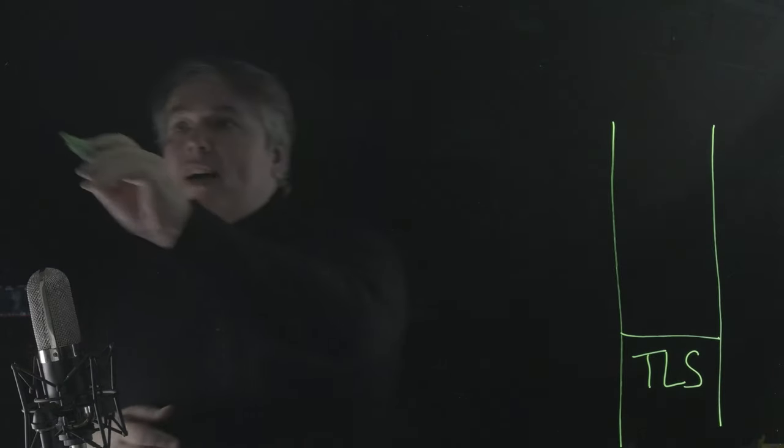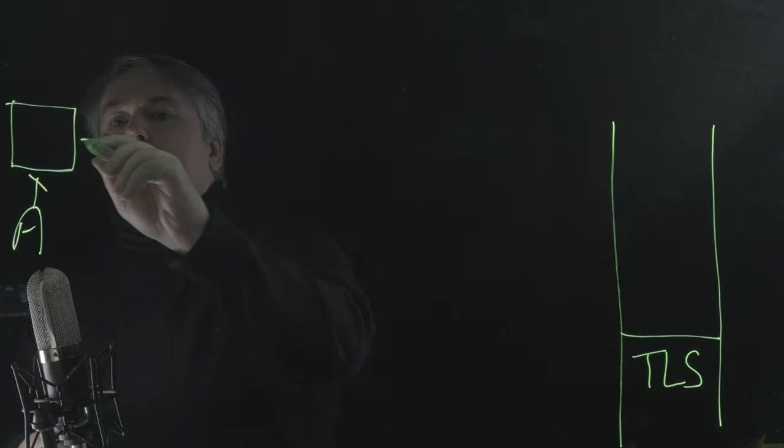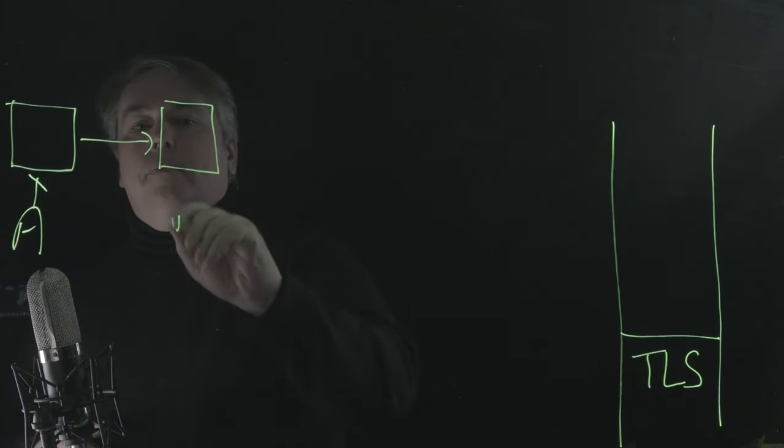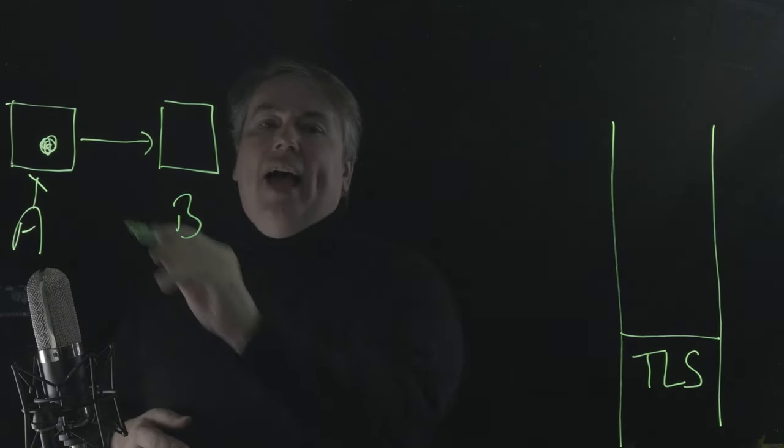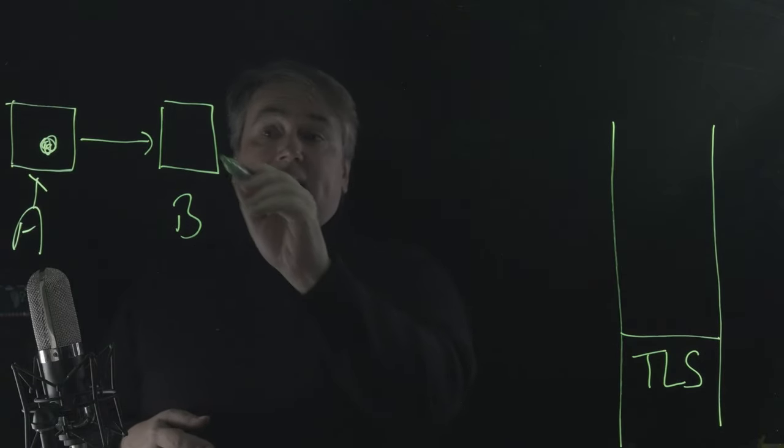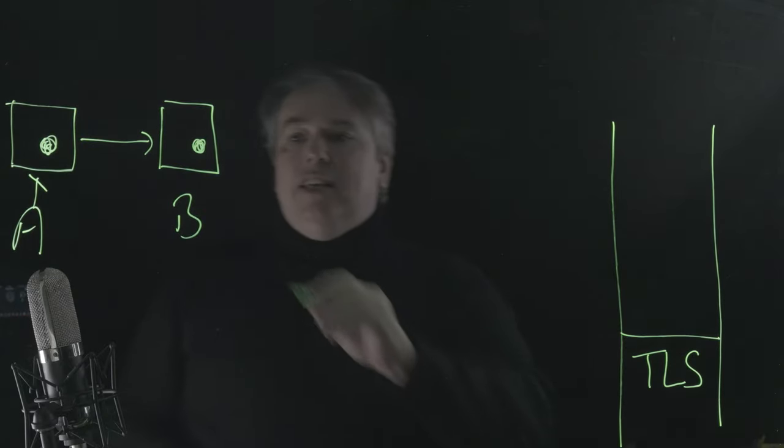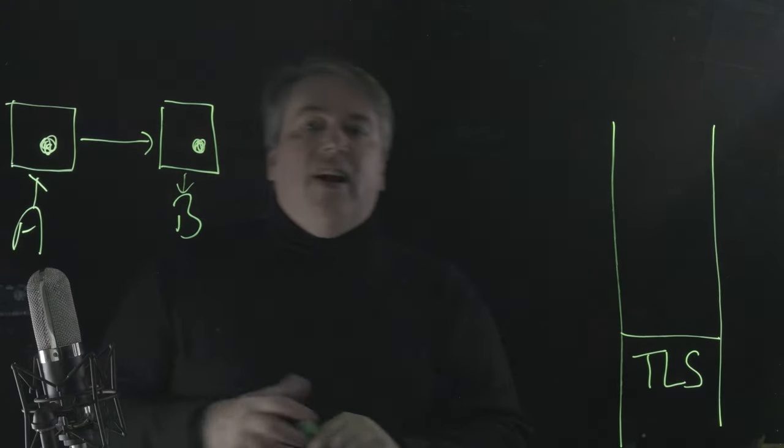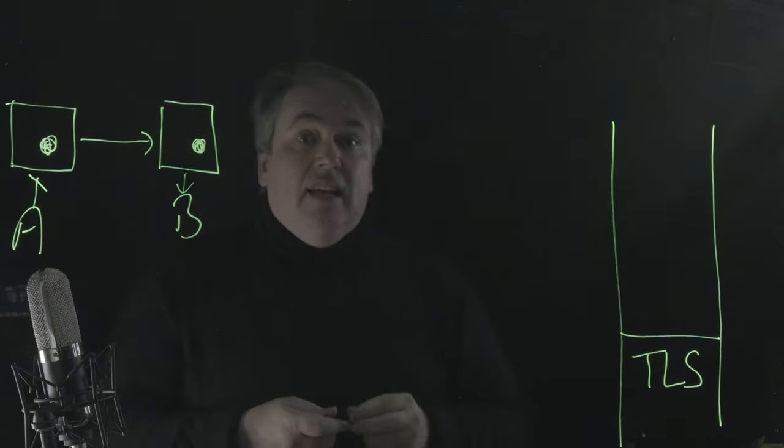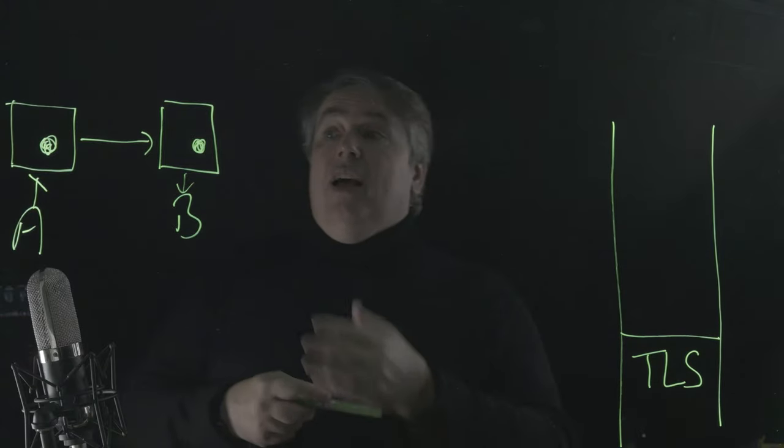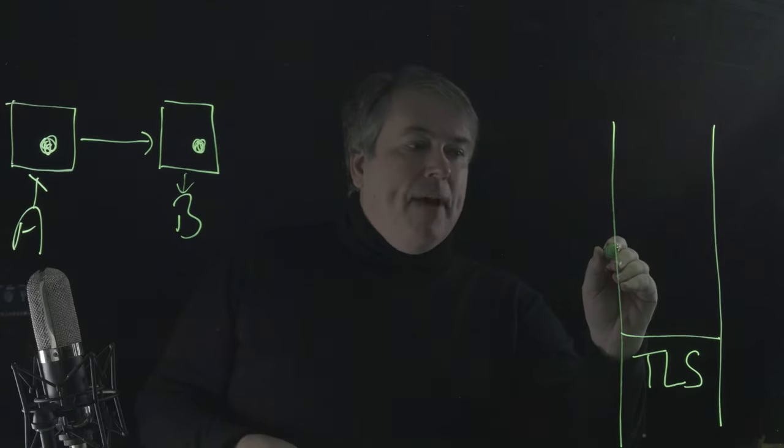When we have our store and forward, so we have Alice here posting to Bob, a copy of the message ends up on Alice's server during the transit at least, and then at Bob's server. It's there until Bob fetches it at the very least. And it could be there for all time because that's just the way mail servers tend to behave. So we really want to encrypt at the message layer as well.